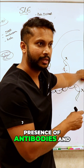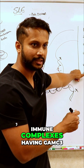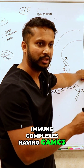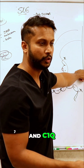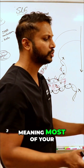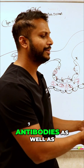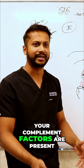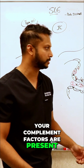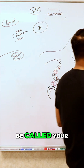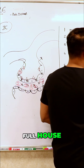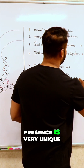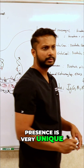The full house refers to the presence of antibodies and immune complexes — specifically IgG, IgA, IgM (GAM), C3, and C1q — meaning most of your antibodies as well as your complement factors are present. This full house pattern is very unique to SLE.